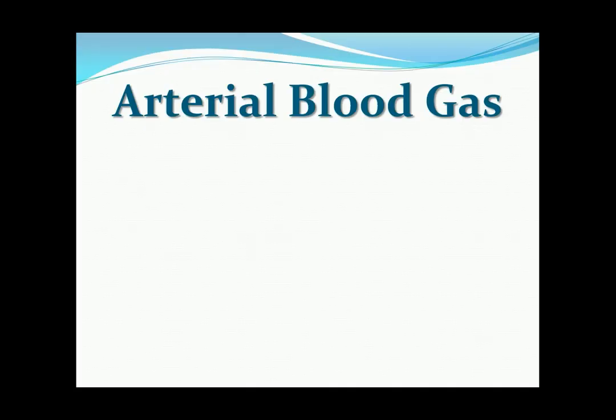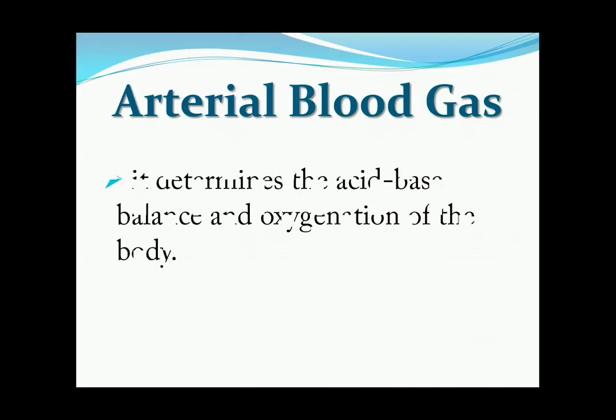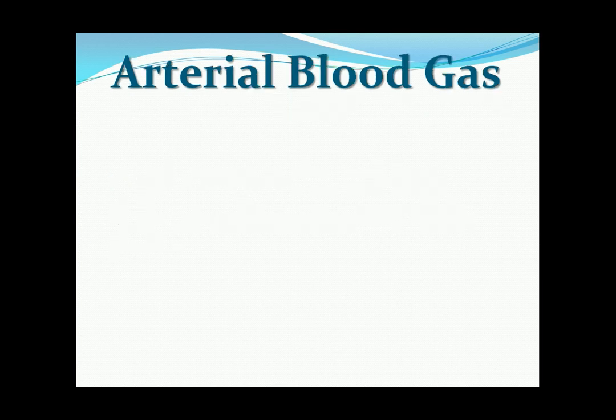First, what is the importance of arterial blood gas? It determines the acid-base balance and oxygenation of the body. Basically, you really need to memorize the normal values for you to be able to know if it's acidosis or alkalosis.